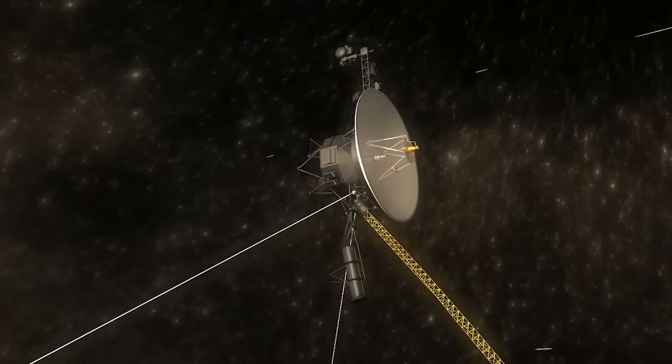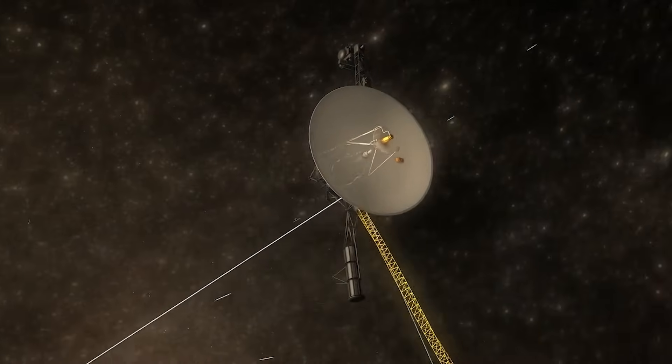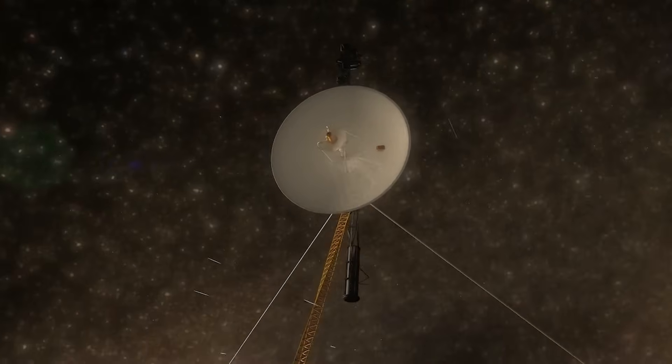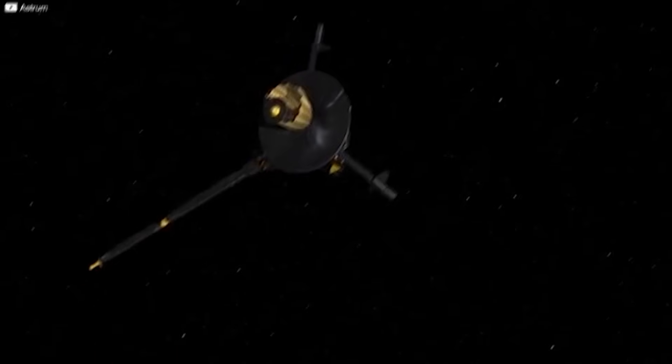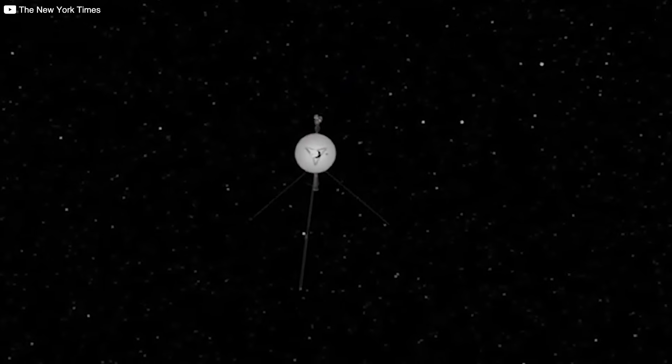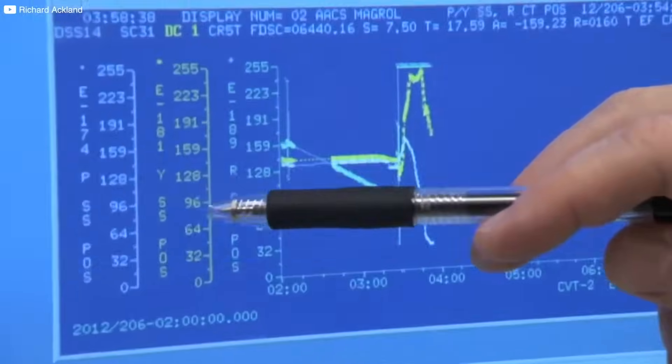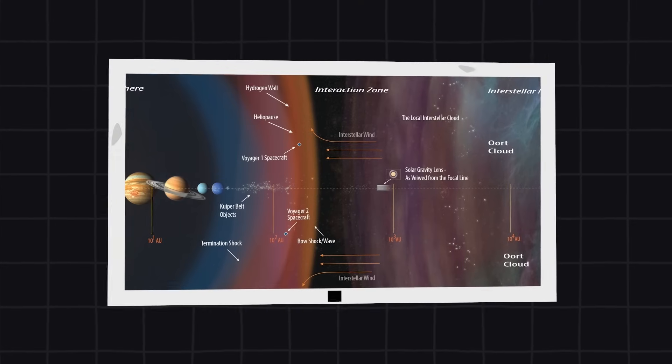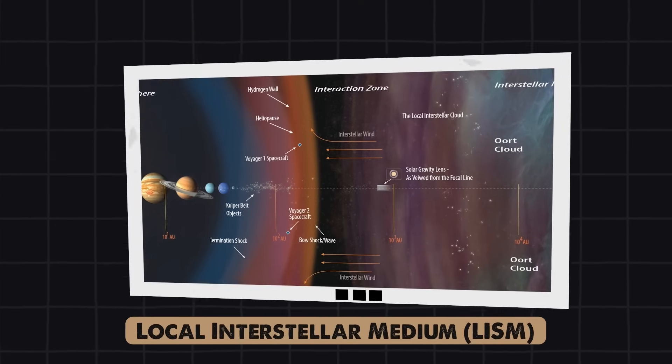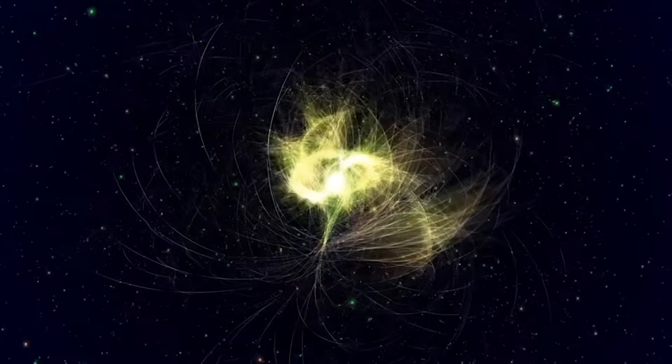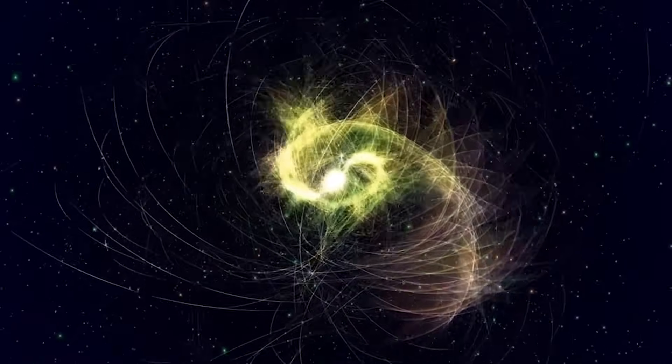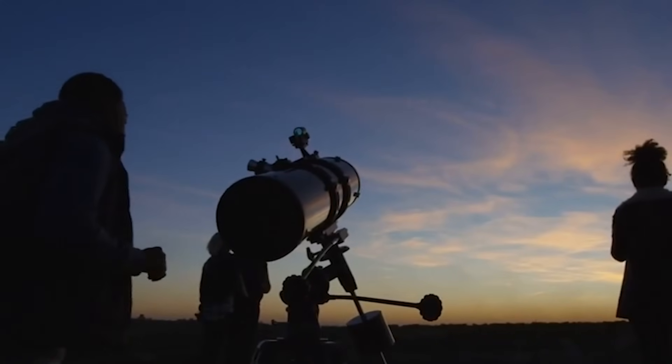Voyager 1's detection of a faint, persistent hum from the plasma between the stars might not sound alarming. No space monsters or looming crises, but it delivered a shock that's reshaping scientific thinking. The shock here isn't about danger. It's about realization, forcing experts back to the drawing board. First, it challenges our models of the local interstellar medium, LISM. For decades, scientists built simulations predicting the density, temperature, and magnetic fields of the space just outside the heliopause using data from telescopes, missions like Ulysses, and theoretical frameworks.